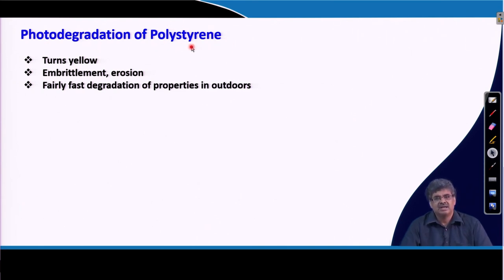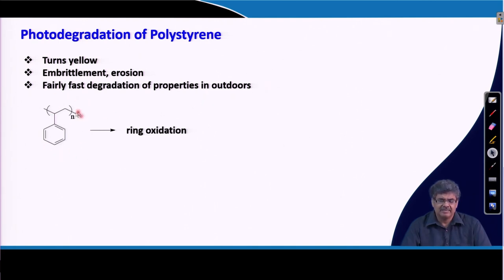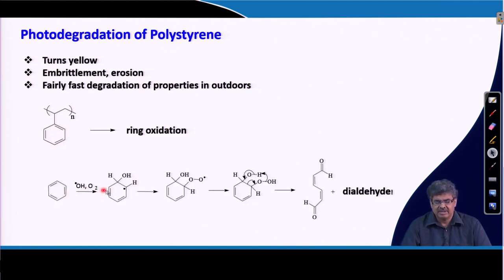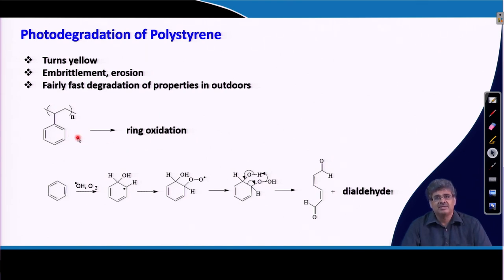This degradation becomes fast in outdoor applications because light contact is more prominent there. It happens because of ring oxidation of the aromatic ring. We need to add additives which will prevent this ring oxidation, or protect the polymer from exposure to harmful light.